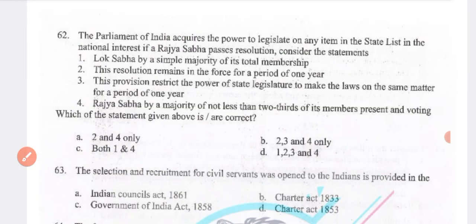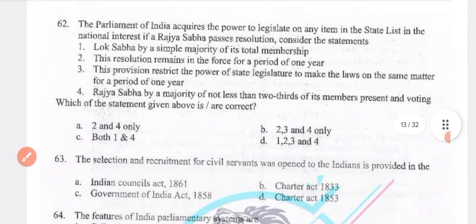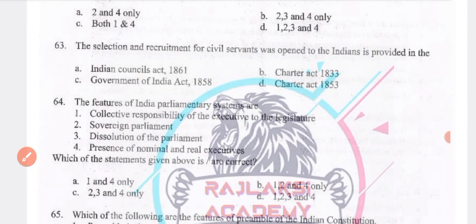Parliament of India acquires power to legislate on any items in the State List in national interest if Rajya Sabha passes a resolution. Statements: Lok Sabha by a simple majority — the resolution remains in force for one year, and the provision restricts state legislature to make laws on the same matter for one year. Rajya Sabha by a majority of not less than two-thirds of members present and voting. Answer: both 1 and 4 are correct.